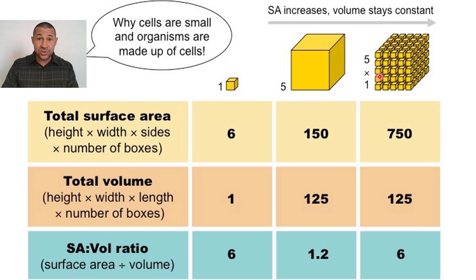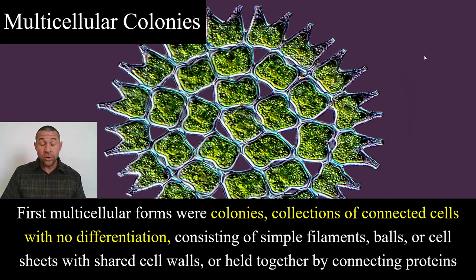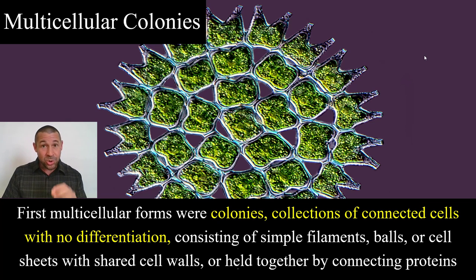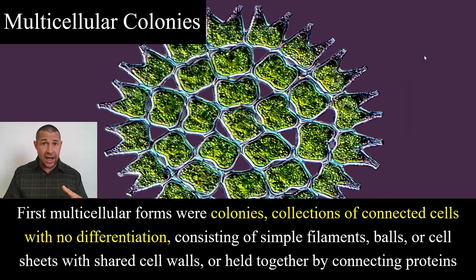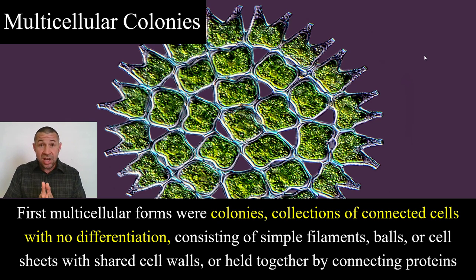Now eventually, life is going to evolve vascular systems — circulatory systems that are going to move gases and nutrients to all of the cells in a multicellular body — but that's going to come later. The first multicellular organisms, and this question shows up on your next assessment, were no more than colonies. They were collections of cells with no differentiation, meaning that all the cells are pretty much essentially the same. These cells don't have specialized functions yet. These colonies were just simple filamentous strings, balls, or sheets.